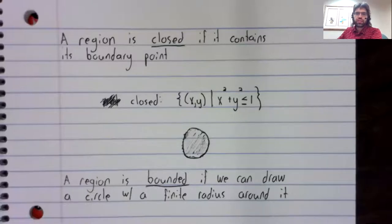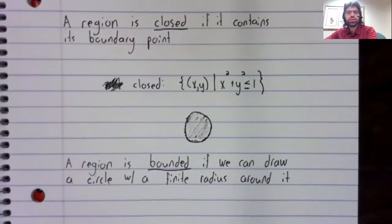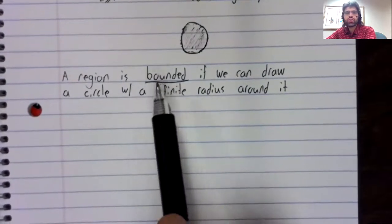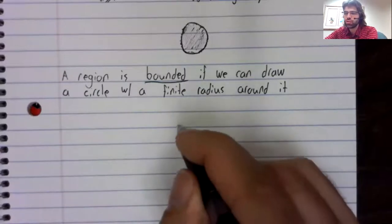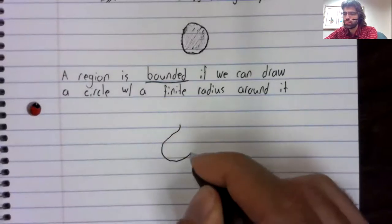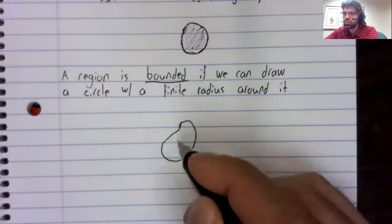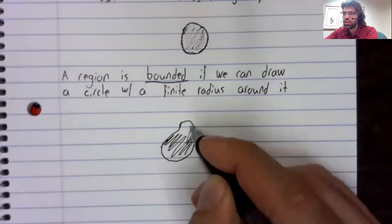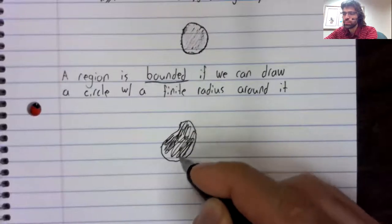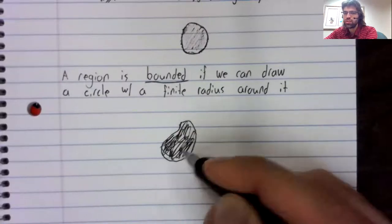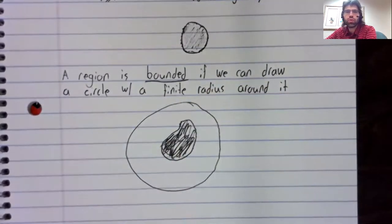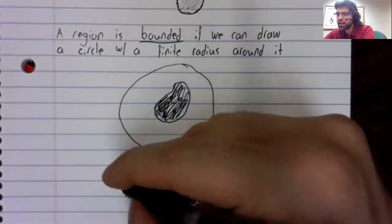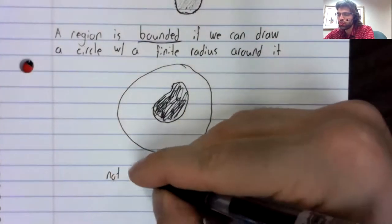Bounded is a pretty intuitive definition. A region is bounded if we can draw a circle around it. So this region here is bounded. We can draw a circle containing it.